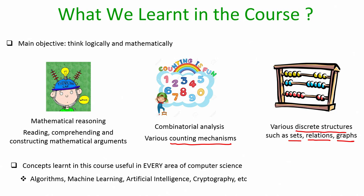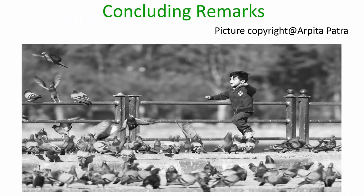We have also discussed abstract algebra and number theory. As I said at the beginning of this course, the concepts we learn here are very useful in any area of computer science — like algorithms, machine learning, artificial intelligence, and cryptography.